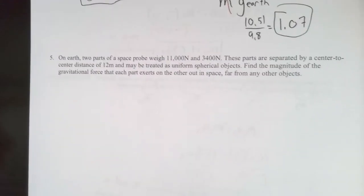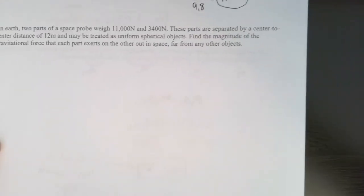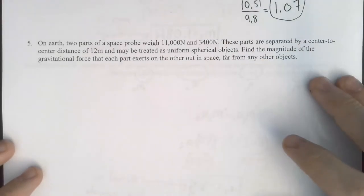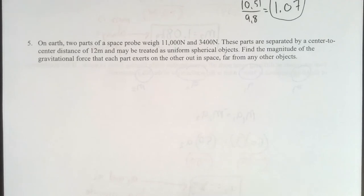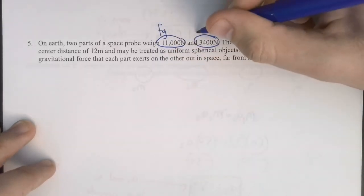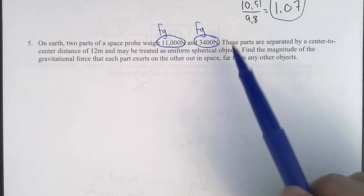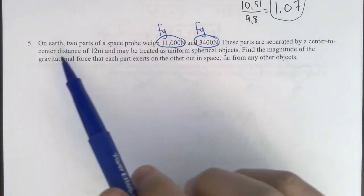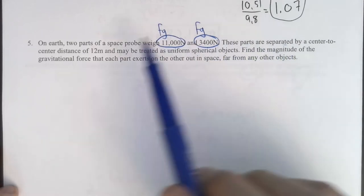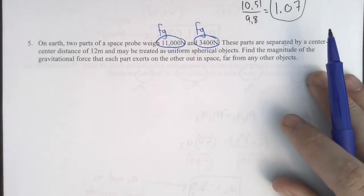Number five, be our last one here. On Earth, two parts of a space probe weigh 11,000 and 3,400. Let's stop right there. What does that mean? The weight. Weight is FG. So those are each FGs on the surface of Earth. These parts are separated by a center to center distance of 12 and may be treated as uniform spherical objects. Find the magnitude of the gravitational force that each exerts on the other out in space far away from any objects.